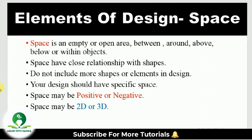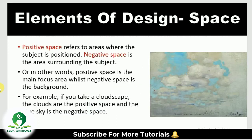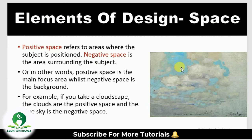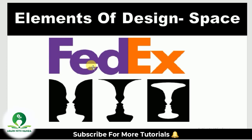Space is basically positive or negative, and it may be 2D or 3D — two-dimensional or three-dimensional. Positive space refers to areas where the subject is positioned, while negative space is the area surrounding the subject. In simple words, positive space is the main focus area, while negative space is the background. For example, in a picture of clouds in the sky, the clouds are positive space and the sky is negative space.